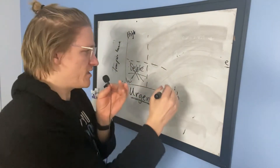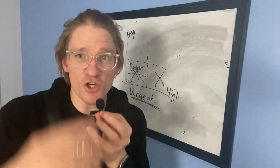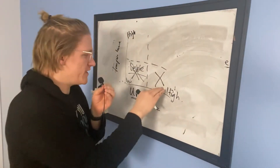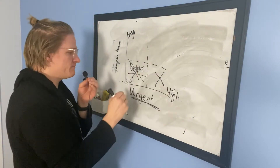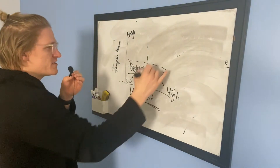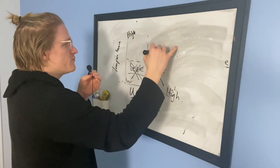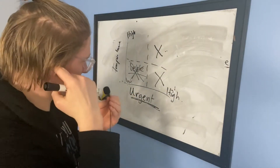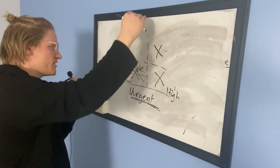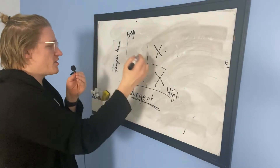A phone call seems high urgency but it's not very important. Then you have things that are super urgent AND important — those are things you have to do right away or things will fall apart. Like paying your mortgage — that's urgent and important, high demand.